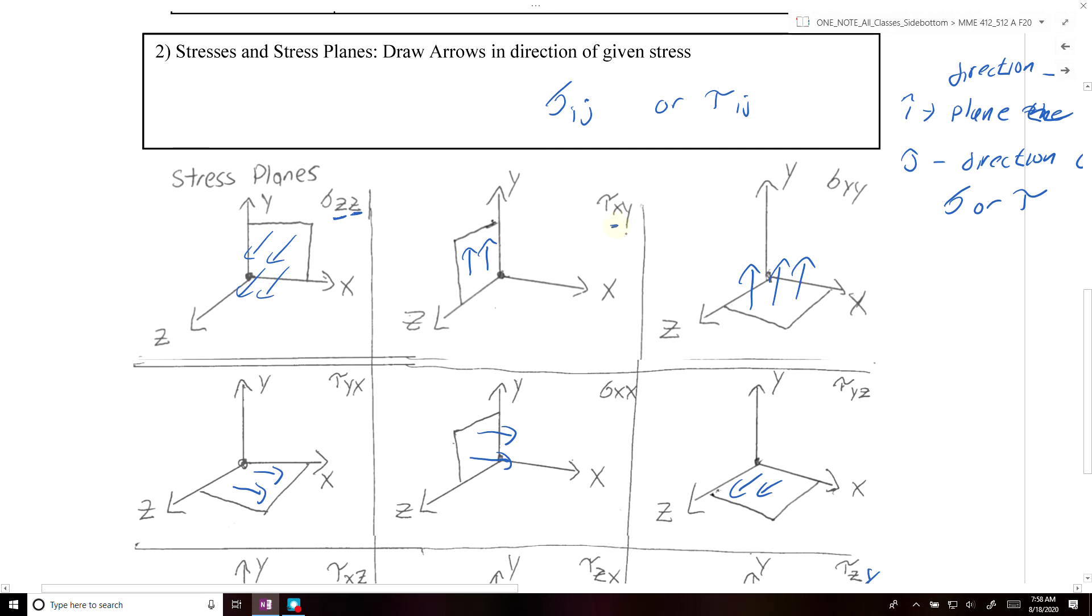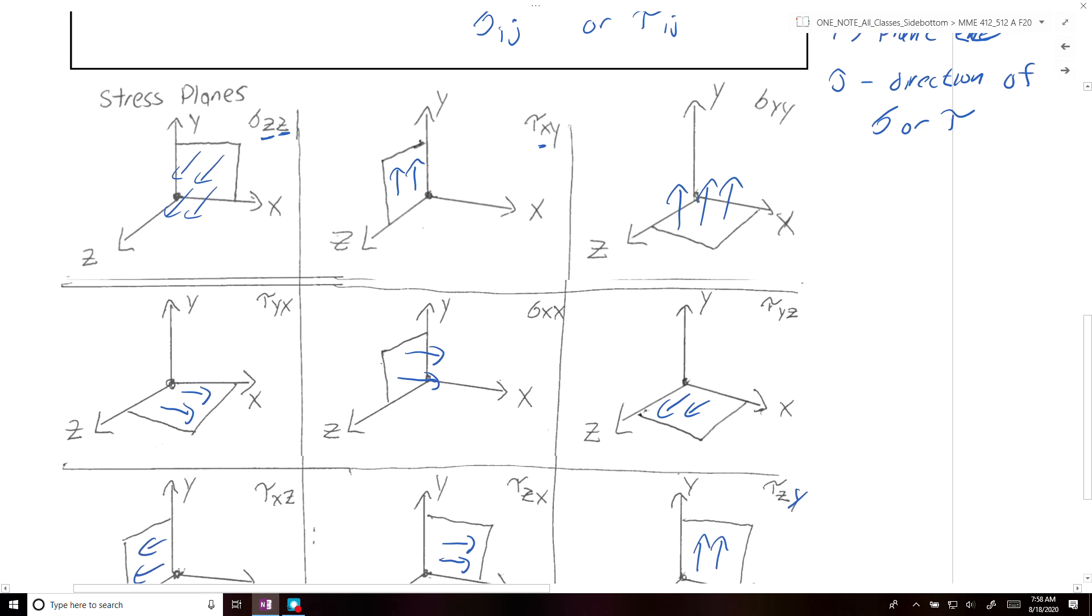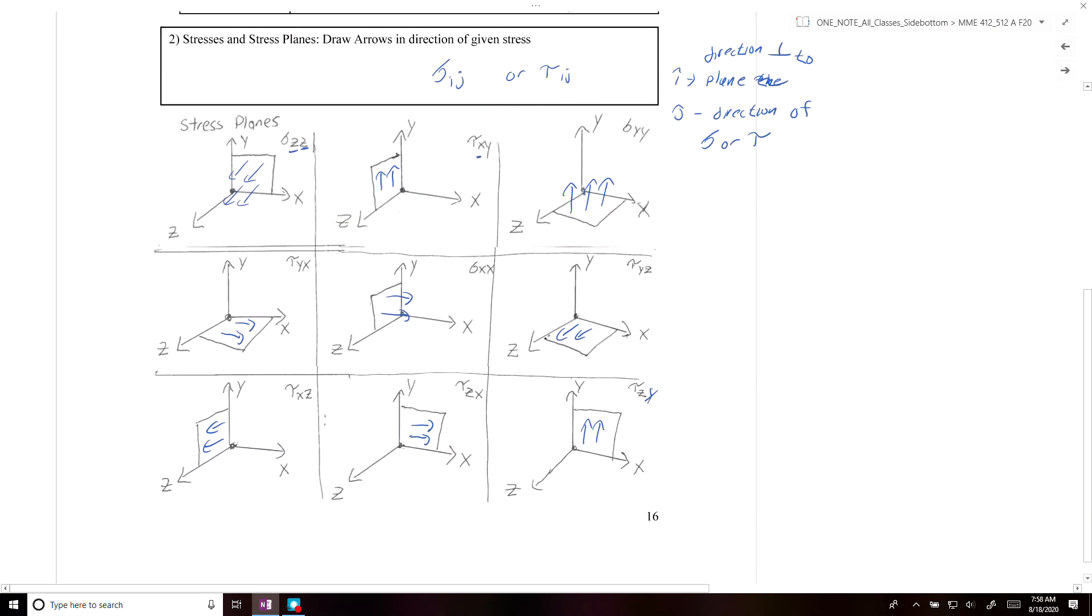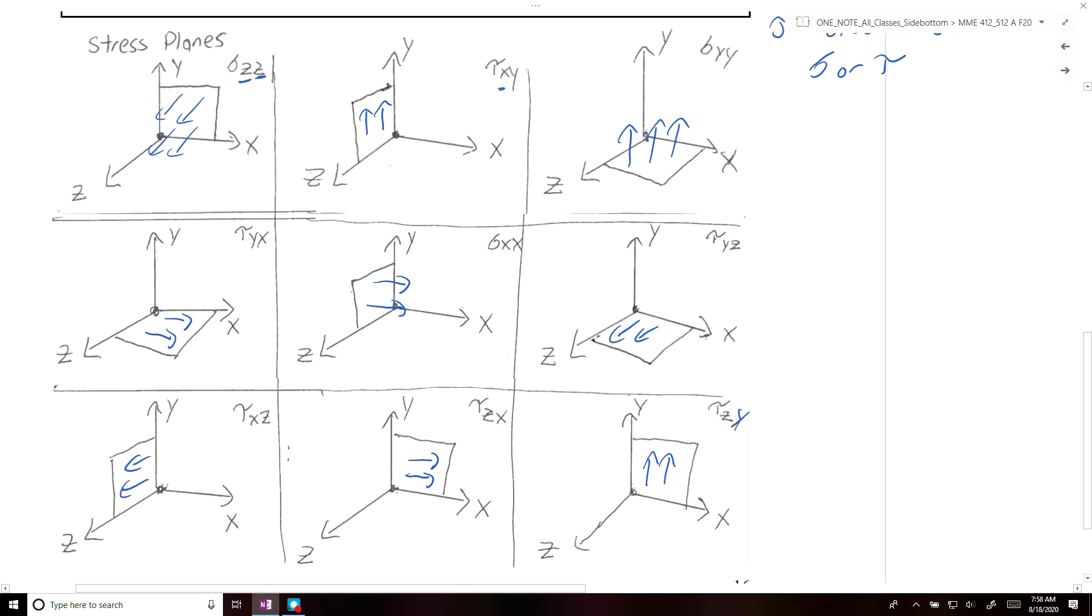Well, for our shear stress, we would say, in this case, the x-axis is normal to the plane, which is on the yz-plane, and then the stress goes along the y-axis, which is why it's drawn along the y-axis. So you could repeat the same process for all the different stress planes, and you would get the following directions.